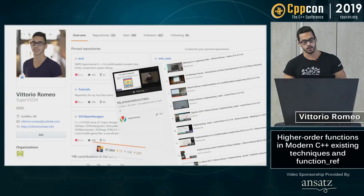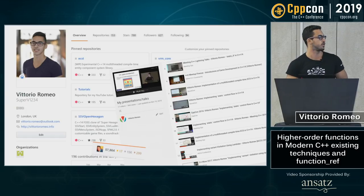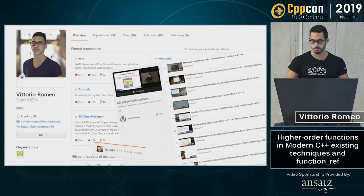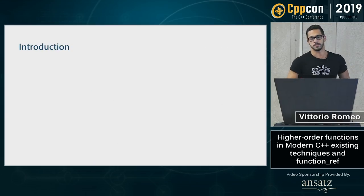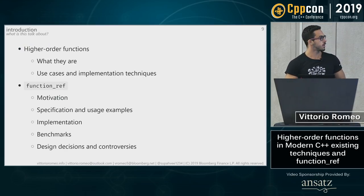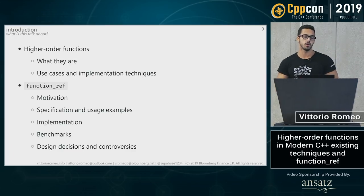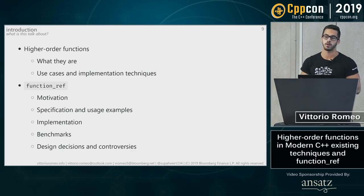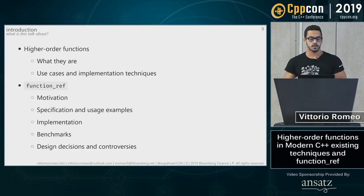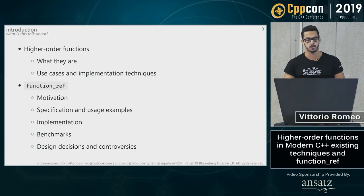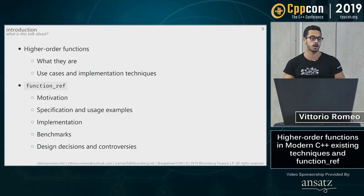Today we're going to talk about higher-order functions: what they are, how we can use them to improve our code, and how we can implement them. The second half of the talk will be about the abstraction 'function_ref', which I proposed for the standard, and we'll see how it interacts with higher-order functions and how it differs from things like std::function.